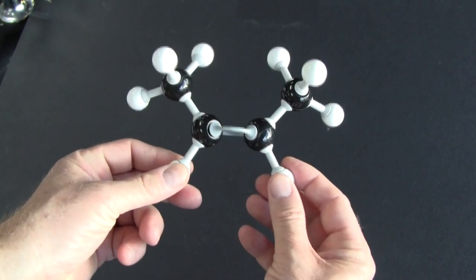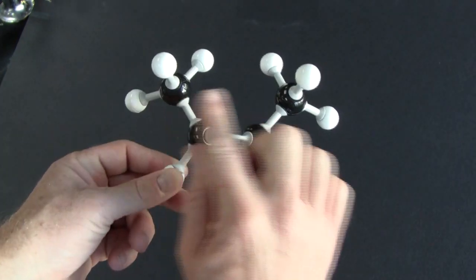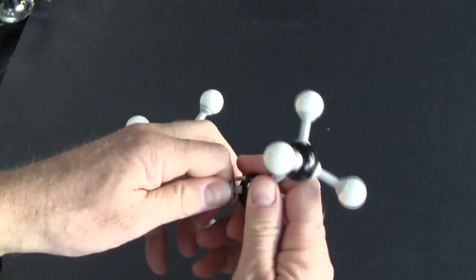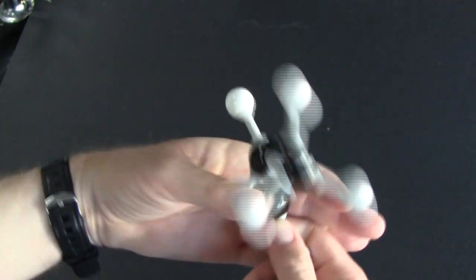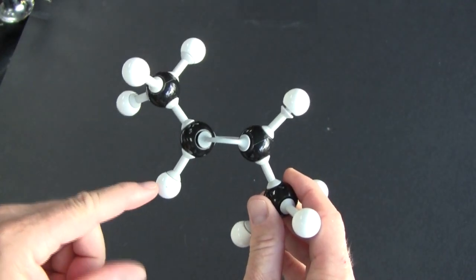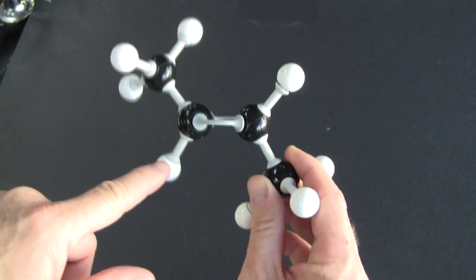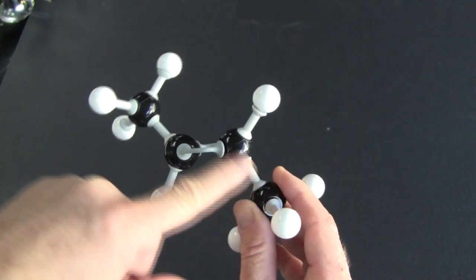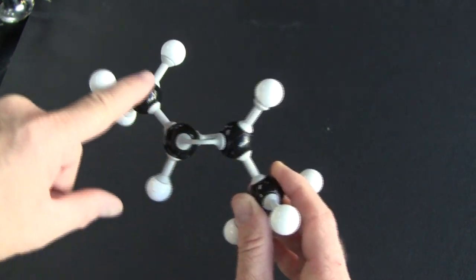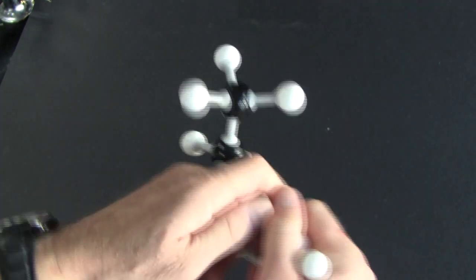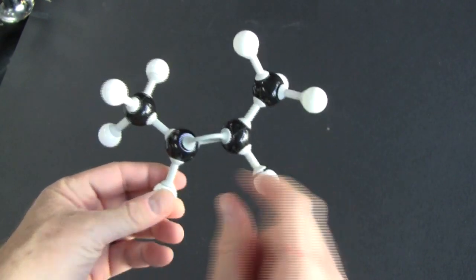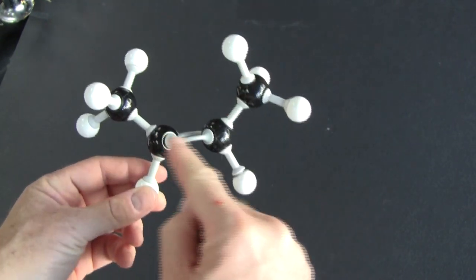We could have the hydrogens both on one side and the methyls on the other, or you could have hydrogens on the opposite sides of the double bond and methyl groups also on the opposite side. Notice that this configuration is more linear, whereas this one is less linear. It seems to have a kind of U shape in it.